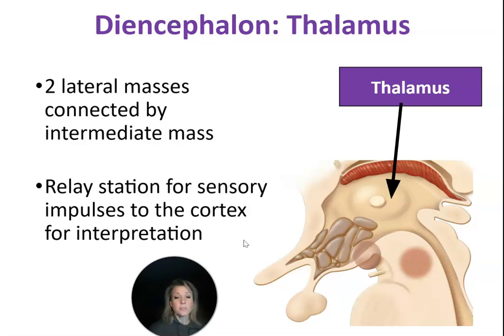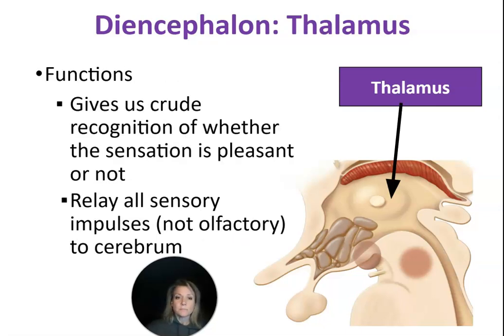All sensory impulses, except for olfactory impulses — the sense of smell — are going to travel through the thalamus to our cerebral cortex.